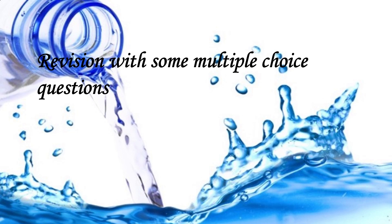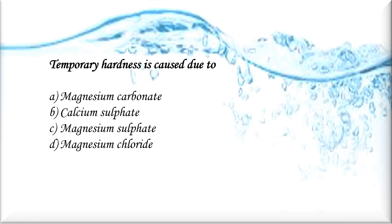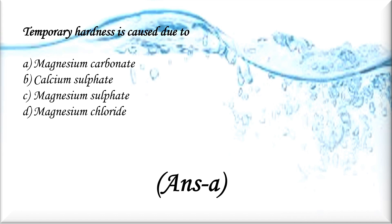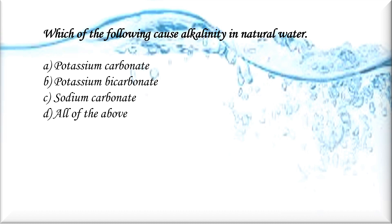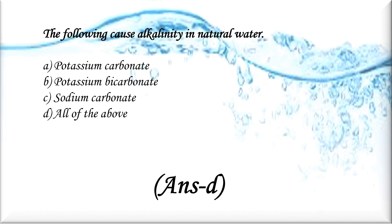Now we will have a revision with some multiple choice questions. First question: temporary hardness is caused due to (A) magnesium carbonate, (B) calcium sulfate, (C) magnesium sulfate, or (D) magnesium chloride. The answer is A, magnesium carbonate. Next question: which of the following causes alkalinity in natural water — potassium carbonate, potassium bicarbonate, sodium carbonate, or all of the above? The answer is D, all of the above.